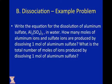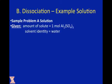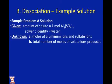One mole of aluminum sulfate. We are given the amount of solute — one mole of aluminum sulfate — and the solvent is water. Our unknowns are the moles of aluminum ions and the sulfate ions, and the total number of moles of ions produced.